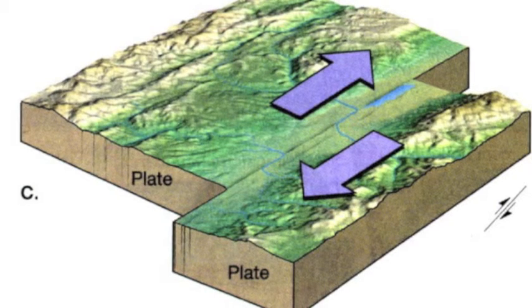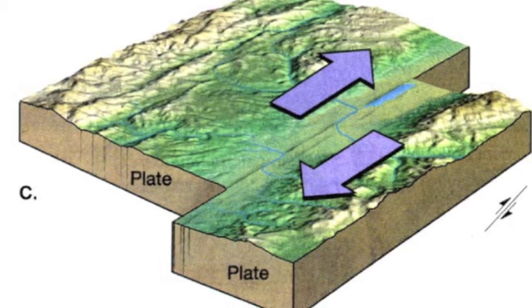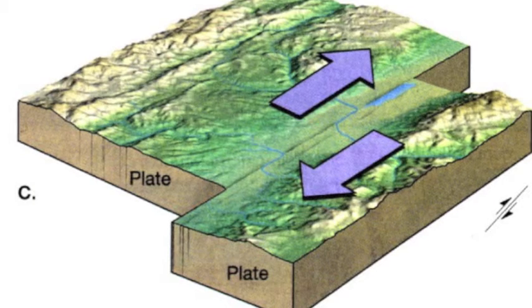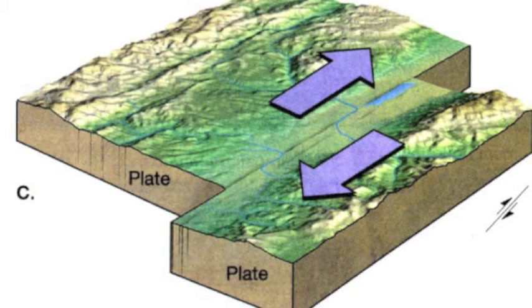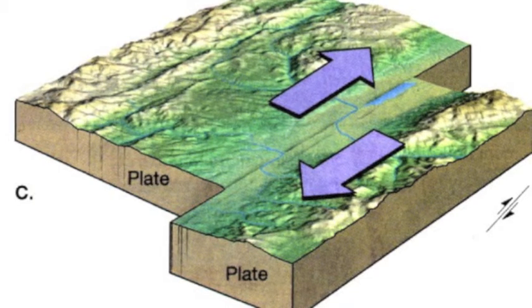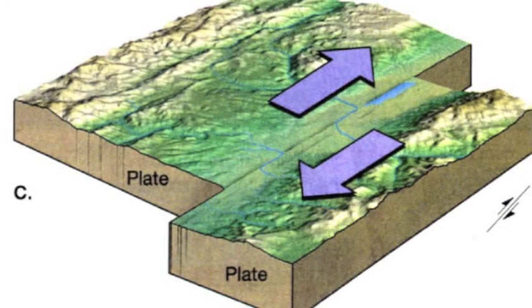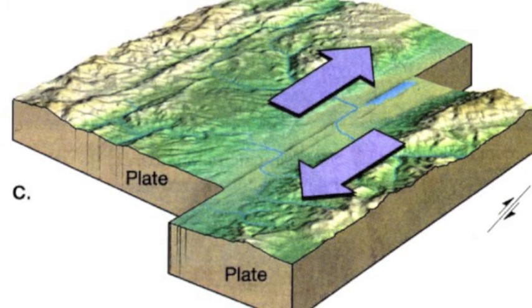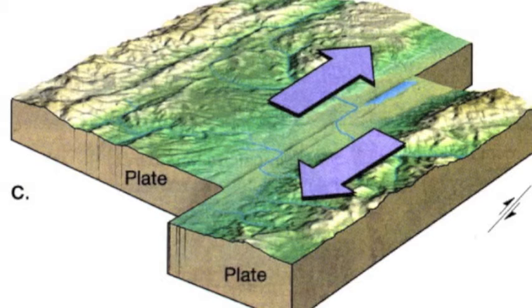Instead, transformation boundaries are marked in some places by linear valleys across the boundary where rock has been ground up by the sliding. The most famous transformation boundary is the San Andreas Fault.